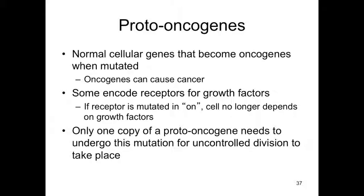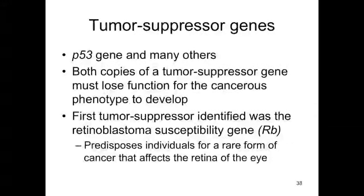In proto-oncogenes, only one of the two chromosomal copies needs to go wrong and have a mutation for uncontrolled cell division to take place — so it's a dominant mutation. If there's one copy of an 'on' light switch, that copy can be expressed and it signals 'on' for cell division without needing both copies mutated. With tumor suppressor genes, however, both copies have to lose function for the cancerous phenotype to develop, so p53 acts more as a recessive type of mutation.